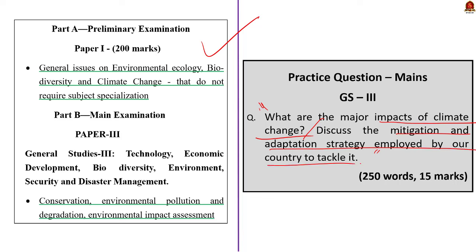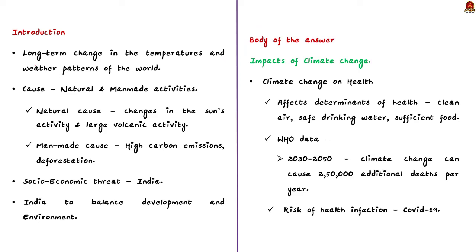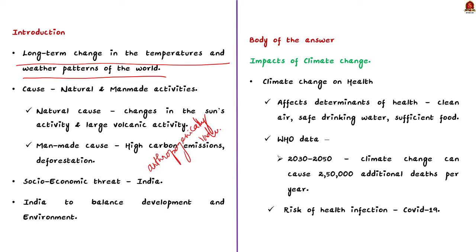Since the question primarily revolves around climate change, you can start the intro by explaining it. Climate change refers to a long-term change in the temperatures and weather patterns of the world. Though it can be a natural phenomenon due to changes in the sun's activity or large volcanic eruptions, our concern is regarding anthropogenically induced climate change. It poses a socio-economic threat to various developing countries including India, which is placed between the dichotomy of development versus conservation.